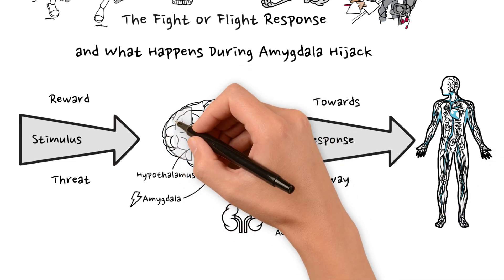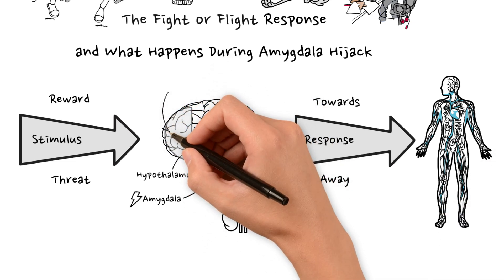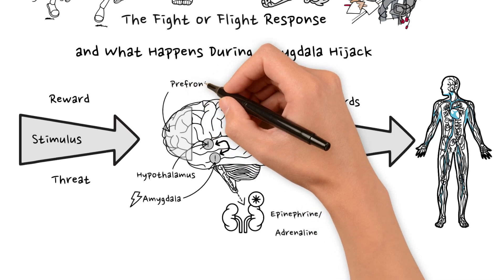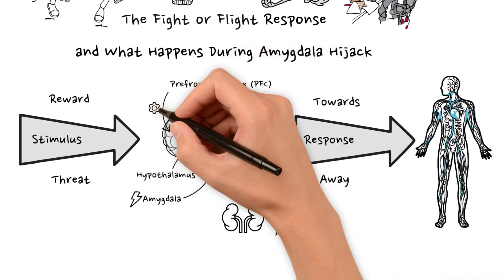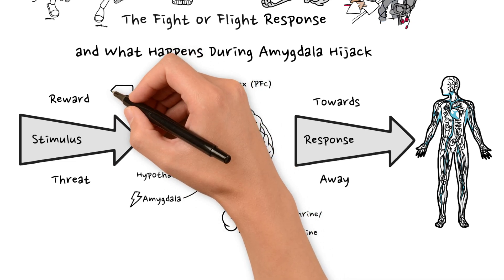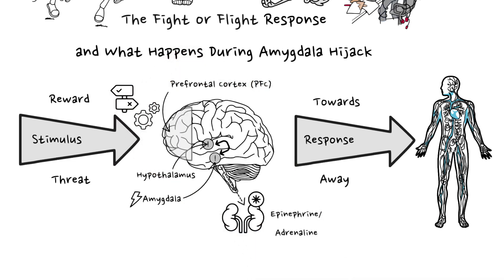These changes impact other parts of the brain. The frontal lobes, and in particular the prefrontal cortex, sometimes referred to as the PFC, is the area of the brain that deals with reasoning, decision-making, planning and evaluating emotions.